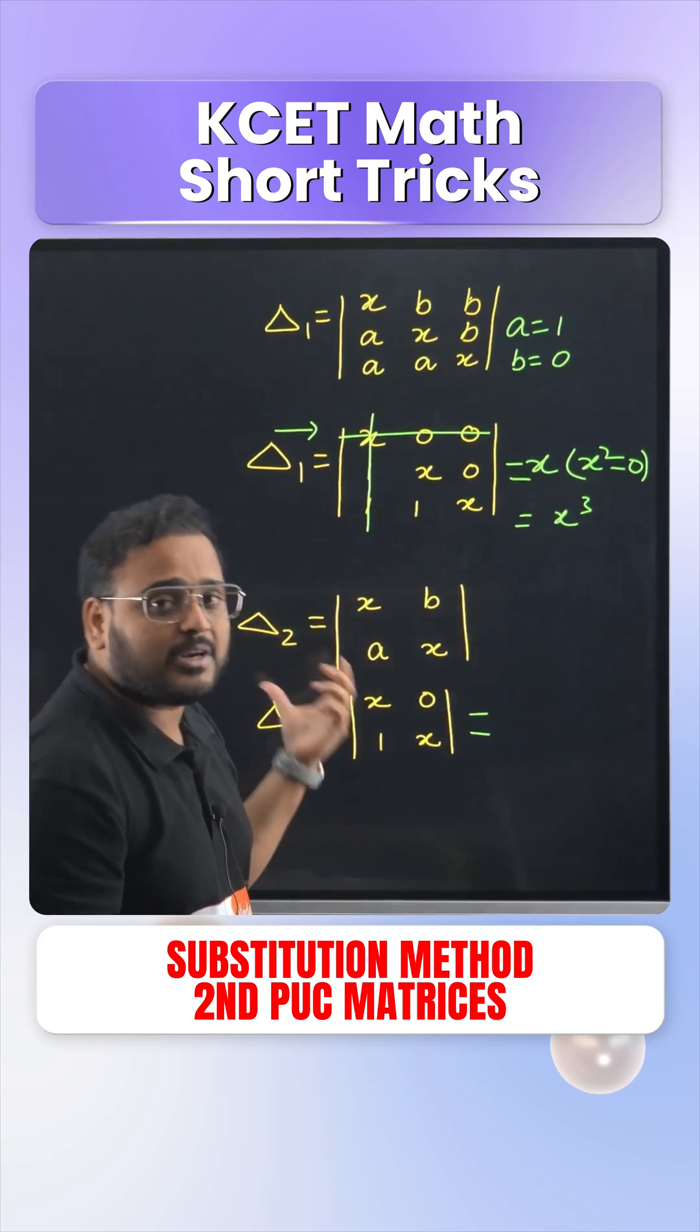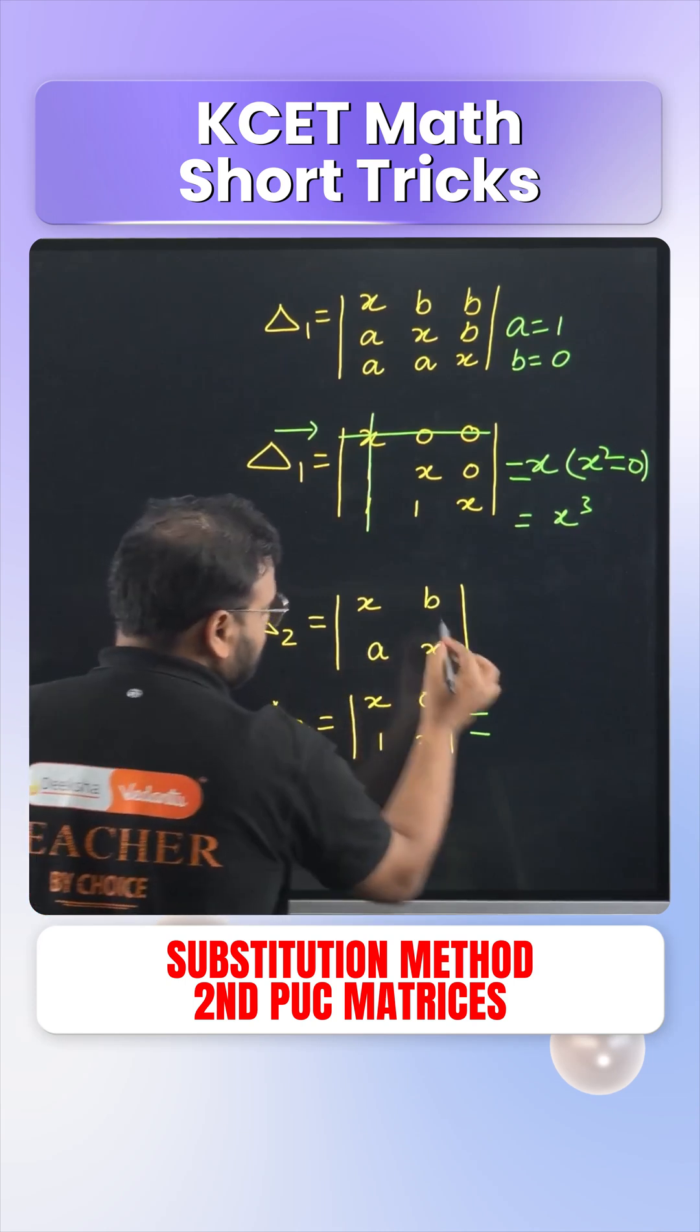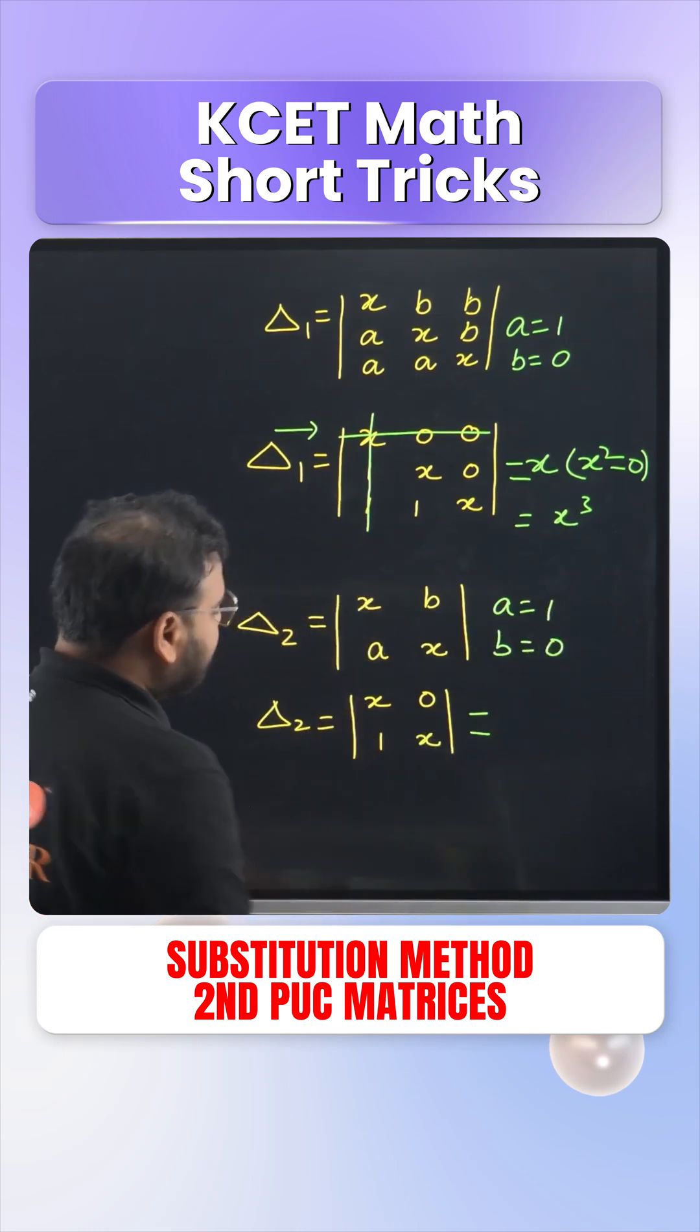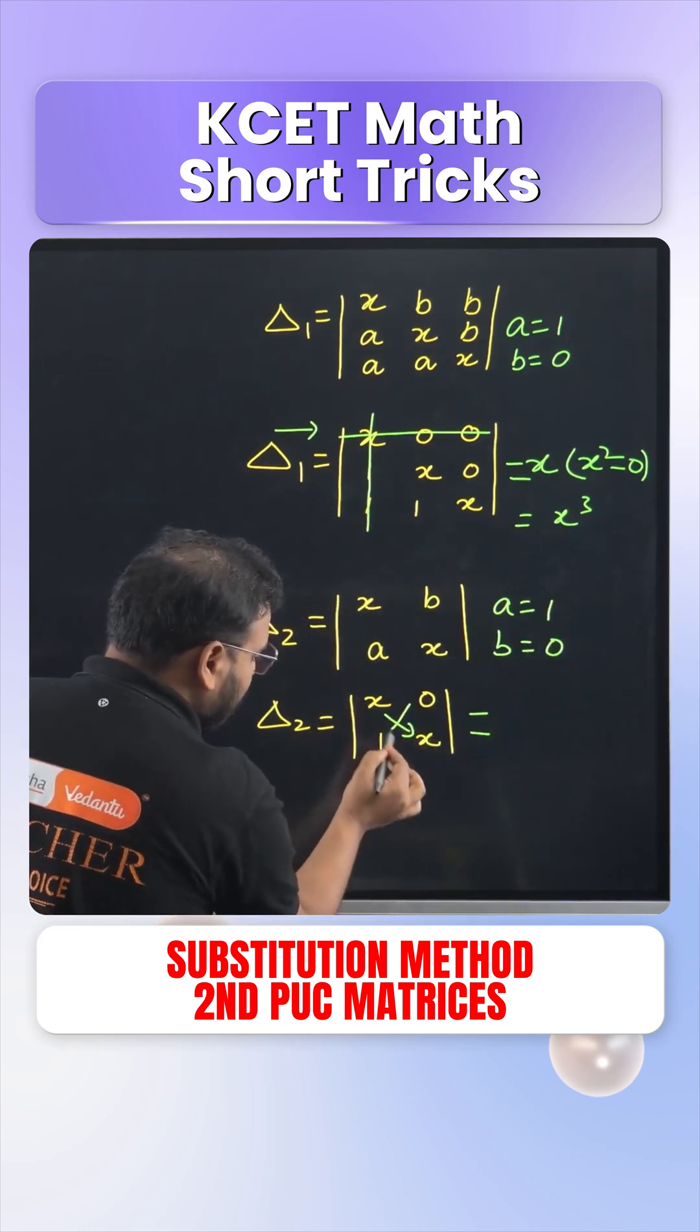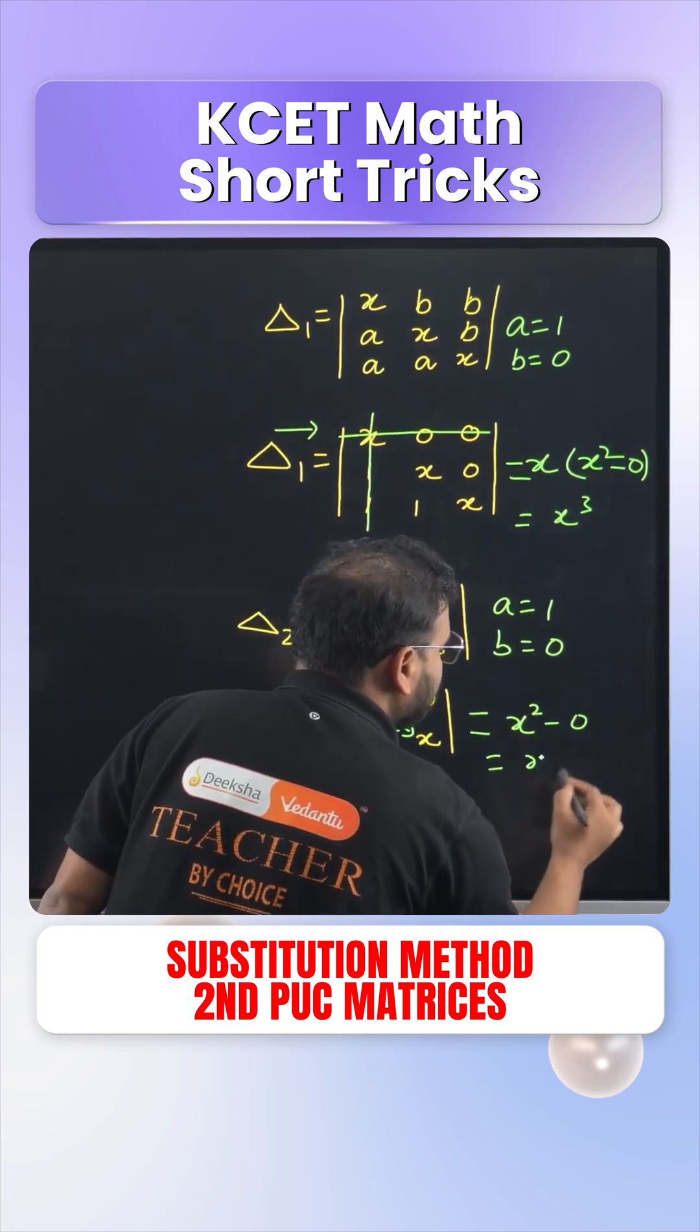Same way if I move on to determinant number 2, the 2 cross 2 order determinant. Same substitution. A value as 1, B value as 0. Determinant if I find it, X into X and 1 into 0 gives me X square minus 0. Simply X square.